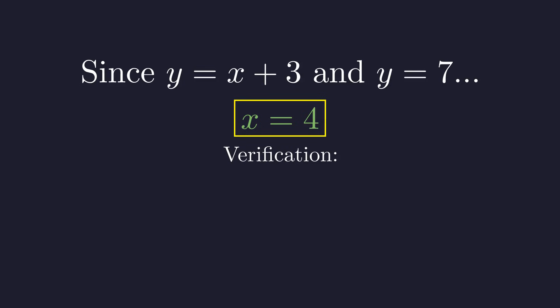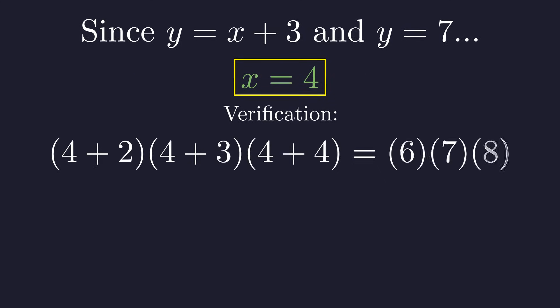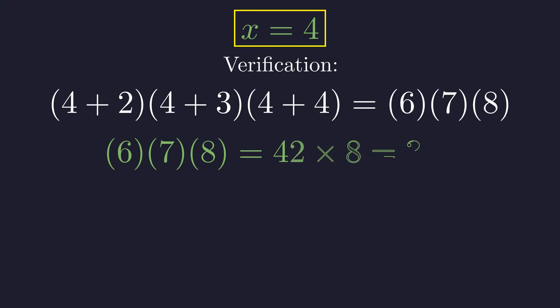Finally, it's always a good idea to do a quick sanity check. Let's plug our answer back into the original equation. Substituting 4 for x gives us 4 plus 2 times 4 plus 3 times 4 plus 4, which is just 6 times 7 times 8. 6 times 7 is 42, and 42 times 8 is 336. Our solution is correct.